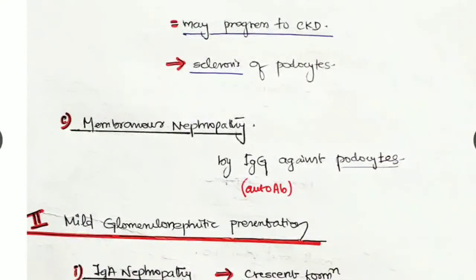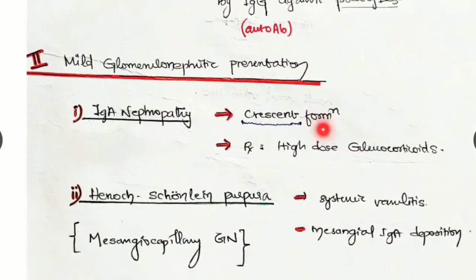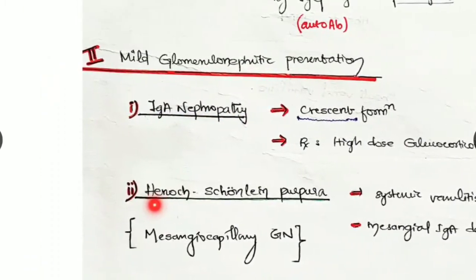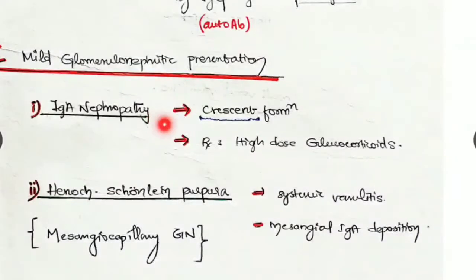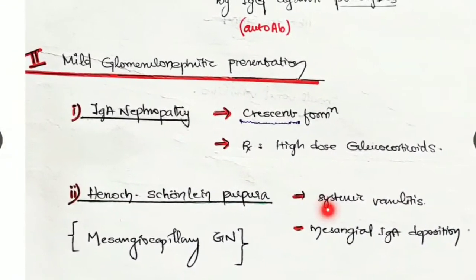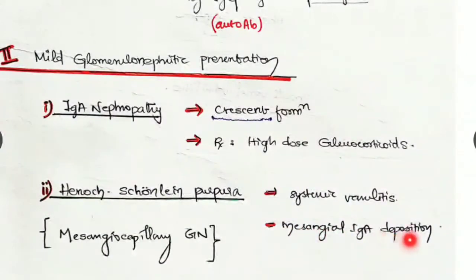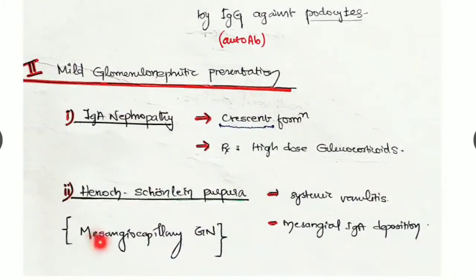The second presentation is the mild glomerulonephritic presentation. Subtypes are IgA nephropathy and Henoch-Schönlein purpura. IgA nephropathy features crescent formation, treated with high-dose glucocorticoids. Henoch-Schönlein purpura is a systemic vasculitis with mesangial IgA deposition, also known as mesangiocapillary glomerulonephritis.